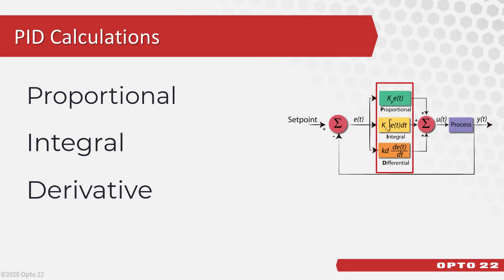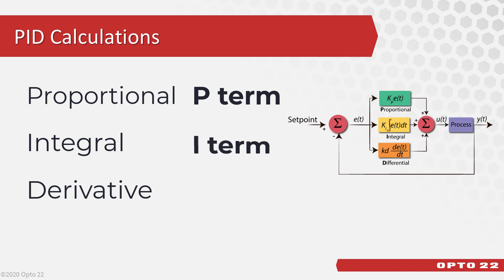The calculations done by the PID algorithm are referred to as the modes of control: the proportional (P term), the integral (I term), and the derivative (D term). How much each term influences the output is determined by the P, I, and D tuning constants — values that you'll enter to tune your PID.